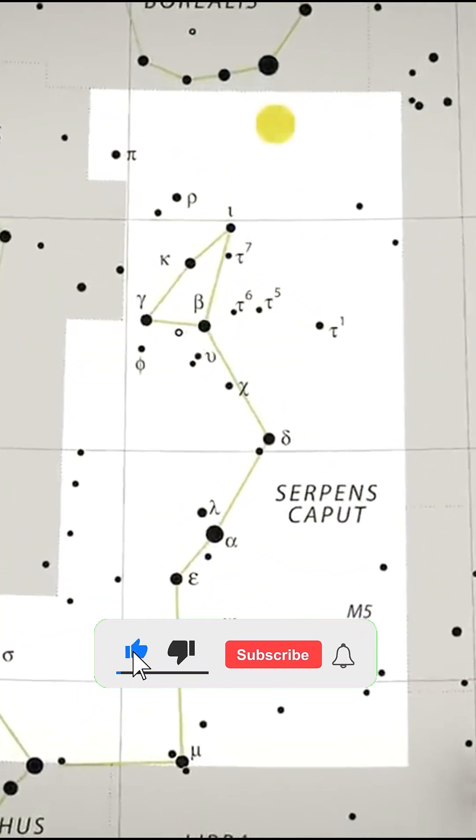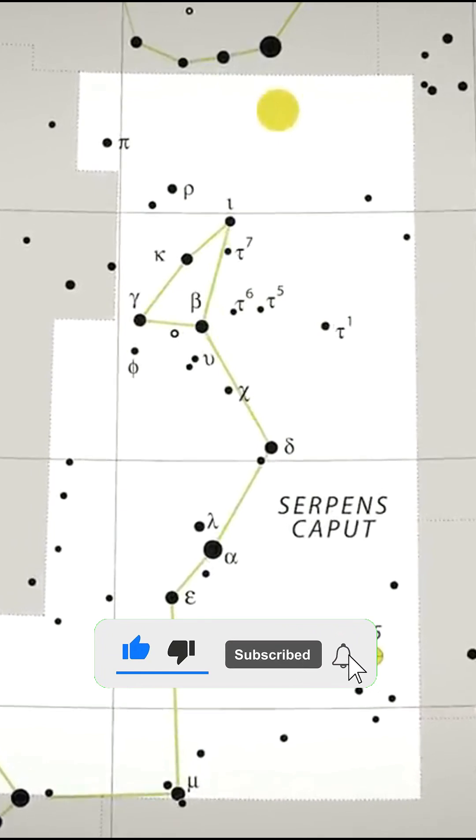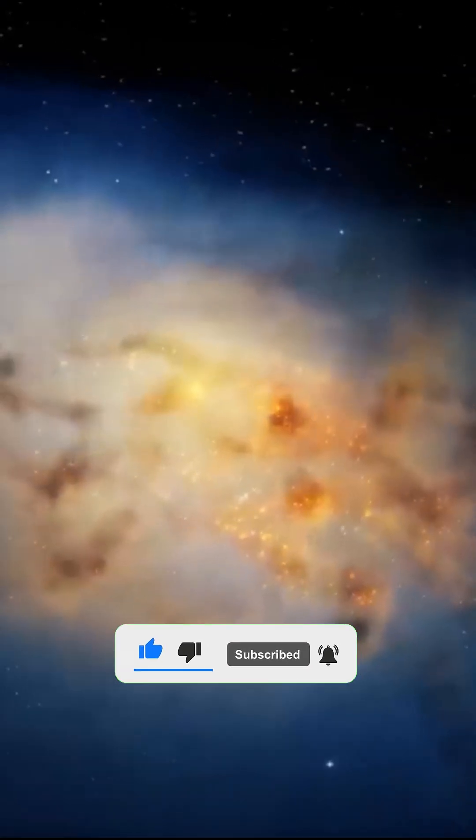ARP-220 is the result of the collision of two galaxies that are currently merging into one.